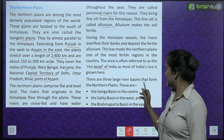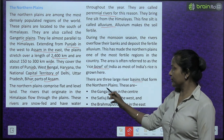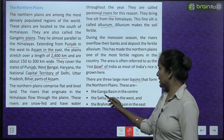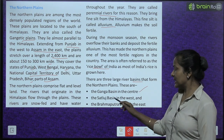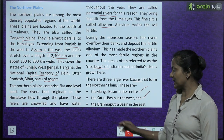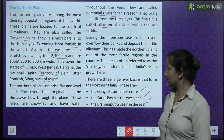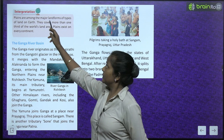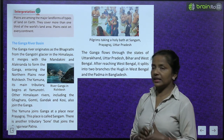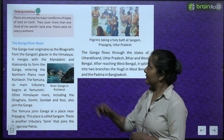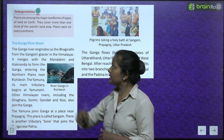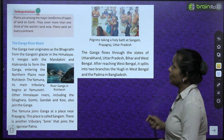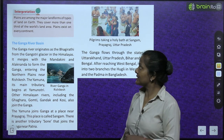There are three large river basins forming the Northern Plains: the Ganga Basin in the center, the Sutlej Basin in the west, and the Brahmaputra Basin in the east. Plains cover more than one third of the world's land area and exist on every continent.